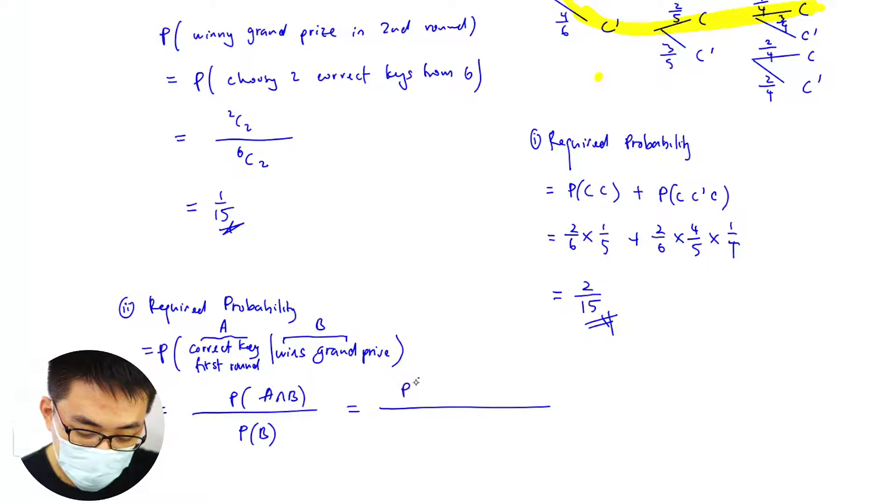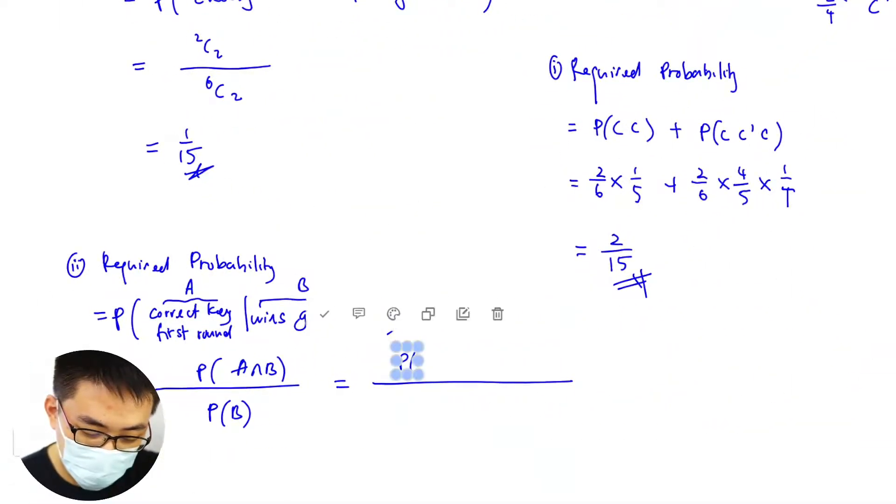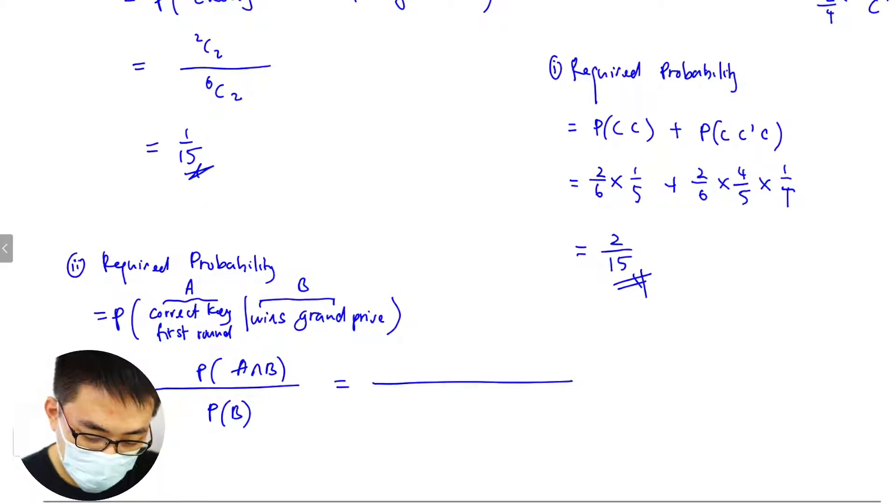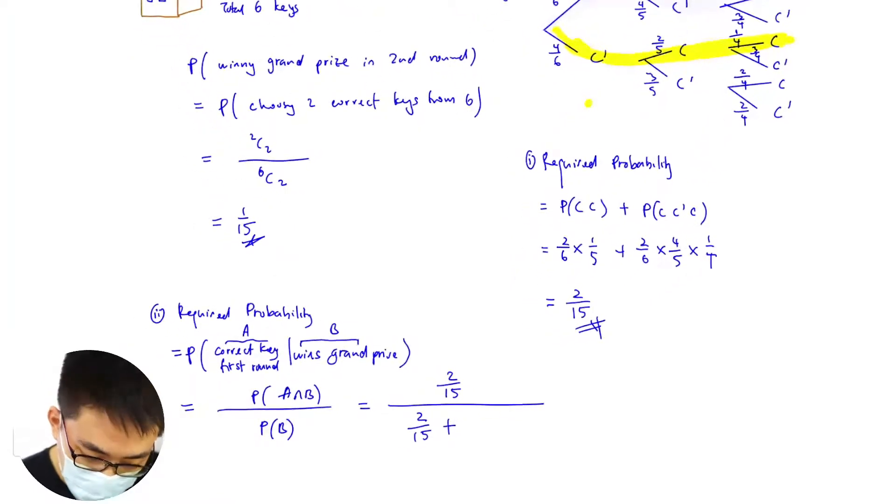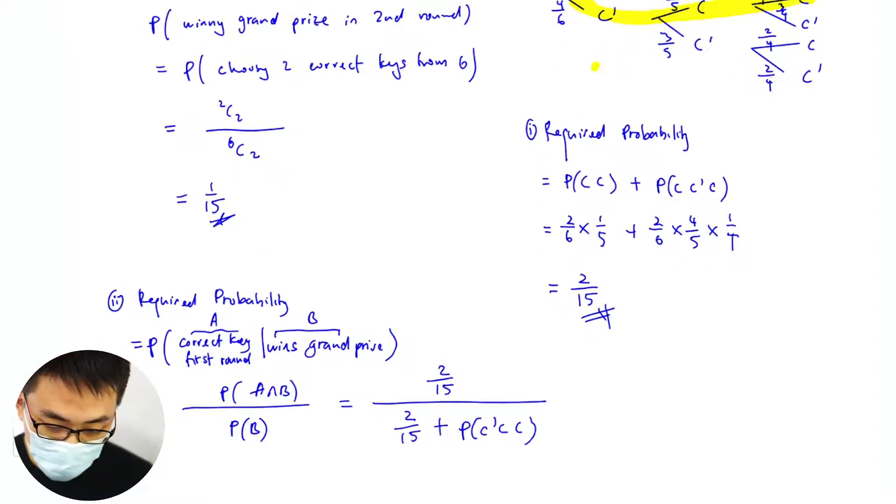P(B) will be 2/15 plus... Okay just add the yellow one. This case here will be...